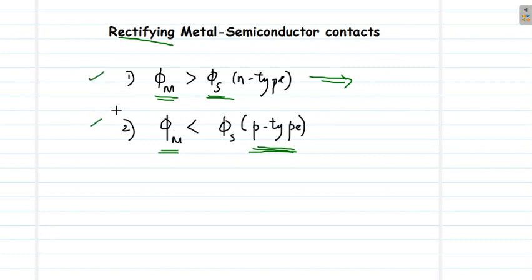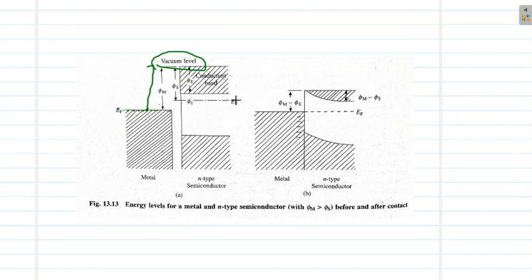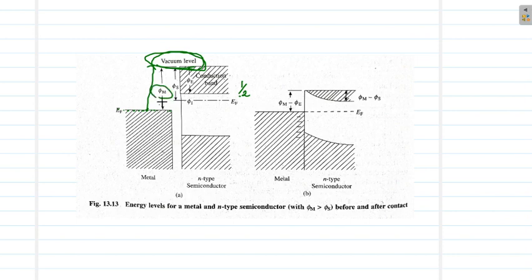Under both these conditions we get a rectifying contact. Work function is the energy required to excite an electron from the Fermi level up to the vacuum level. The vacuum level is the energy corresponding to the absolute free state or ionized state of an electron. In a metal, the Fermi level is defined as the topmost filled energy level, and in a semiconductor it is the level where the probability of finding an electron is 1/2.